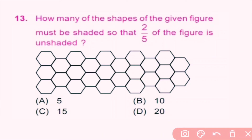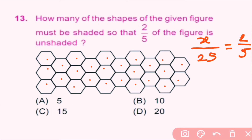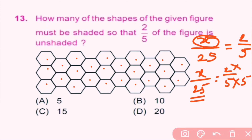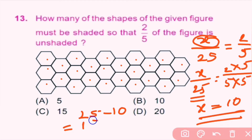Question number 13: How many shapes of the given figure must be shaded so that 2 by 5 of the figure is unshaded? Total number of shapes is 25. If 2 by 5 are unshaded, then unshaded shapes equal 2 by 5 into 25. Multiplying denominator and numerator by 5: 2 into 5 is 10, so 10 shapes are unshaded. Therefore shaded shapes equal 25 minus 10, which is 15. C is the correct answer.